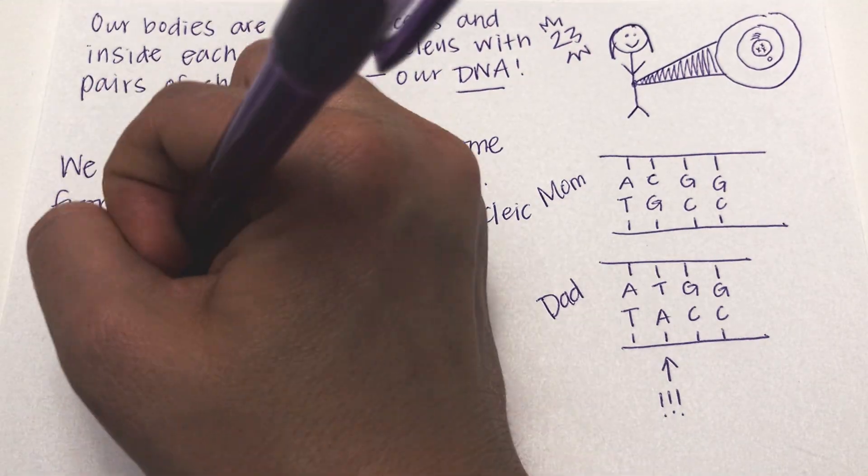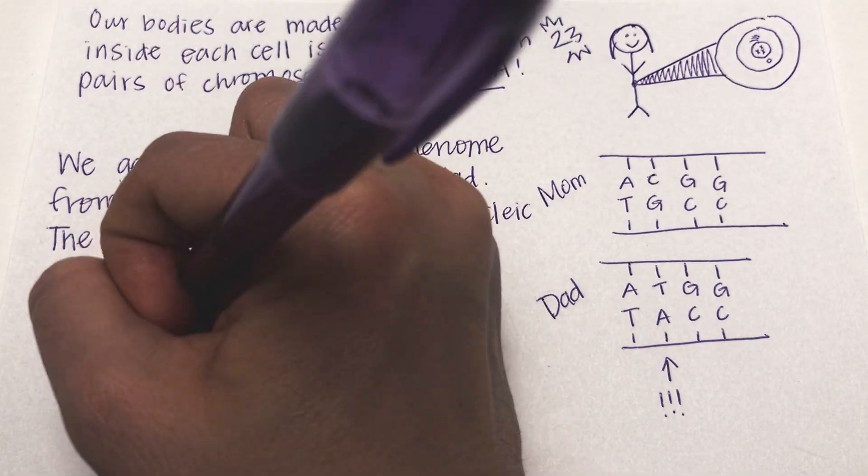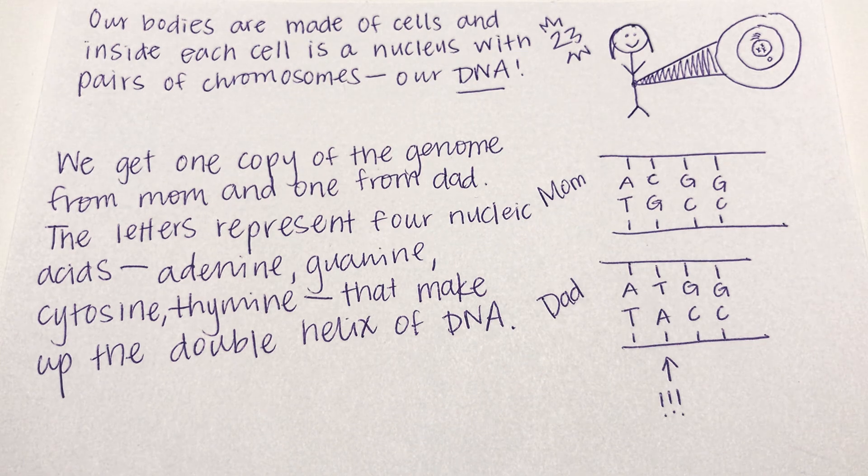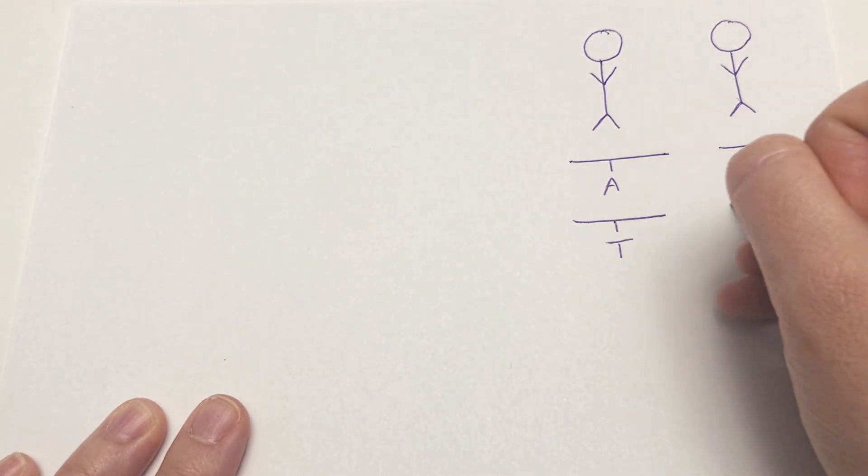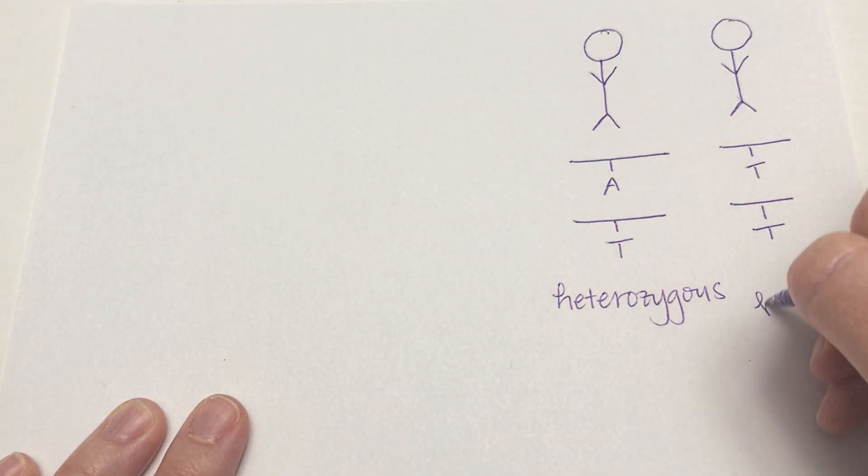They make up the double helix of DNA. The exclamation marks show a place where mom and dad have different nucleic acids. We can measure genetic variation by looking at how these nucleic acids vary between people.